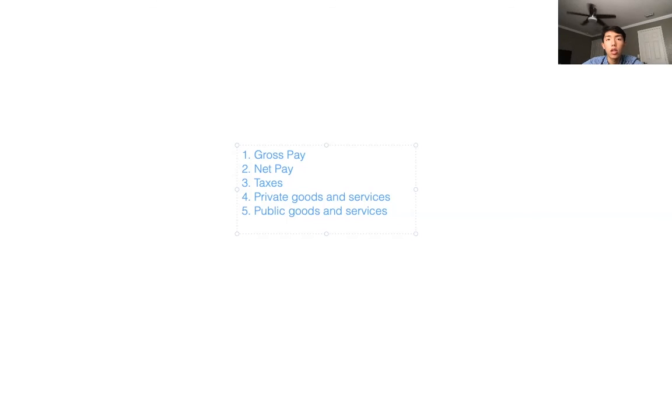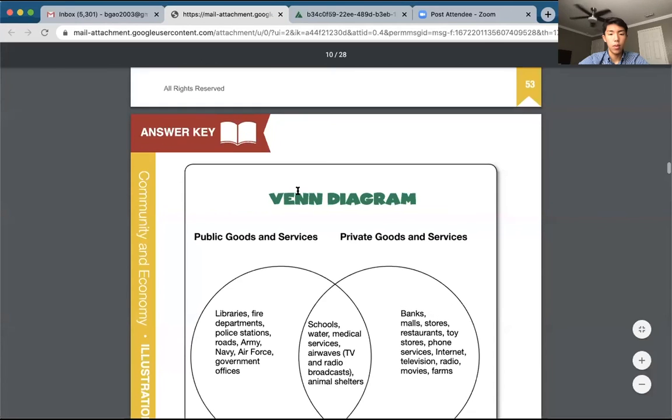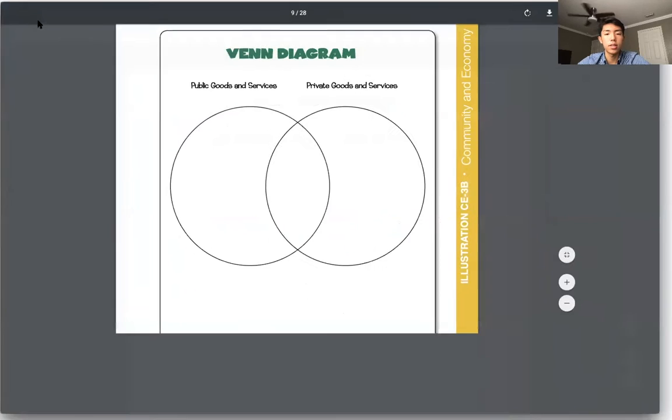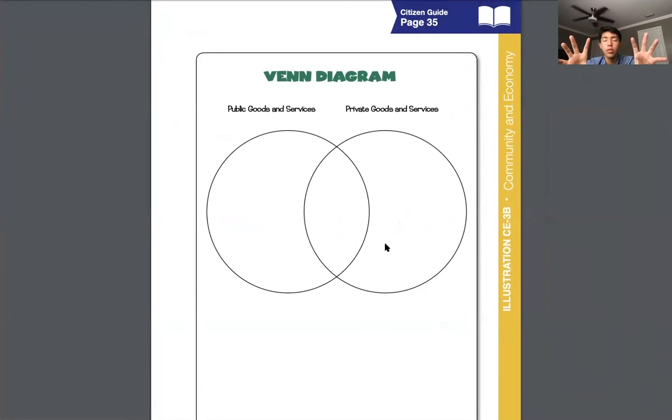We are going to take a look deeper into what our public goods and services are. Very important to understand for this whole overarching image in BizTown. We are going to look at what are public goods and services. You've probably seen this in the classroom before, but this is a Venn diagram. We have two circles. On the left side, we have public goods and services. On the right side, we have private goods and services. And in the middle, we have a little section for what similarities between the two that we can include that are included in both.